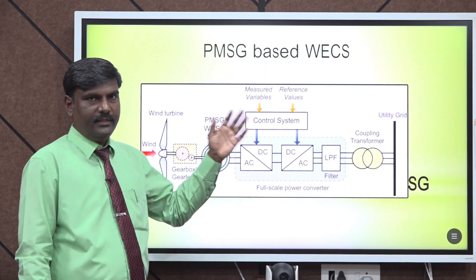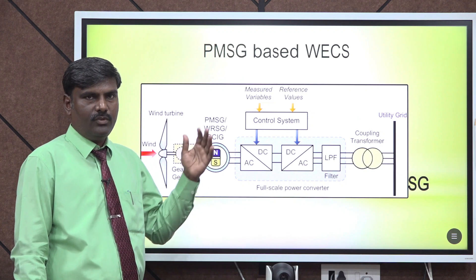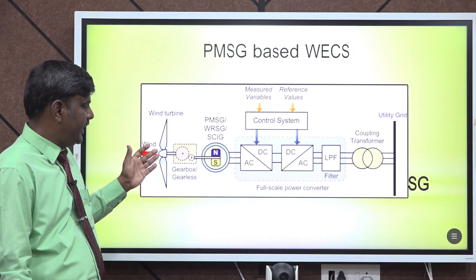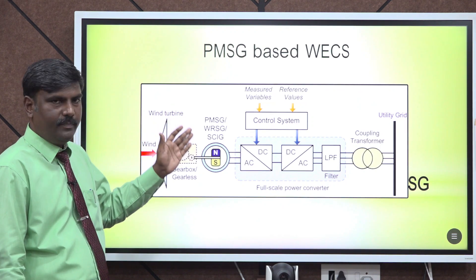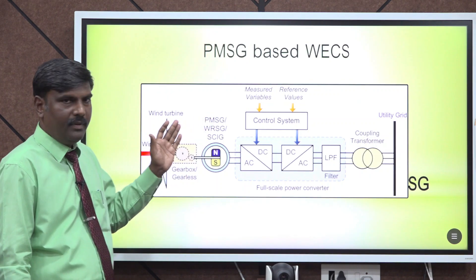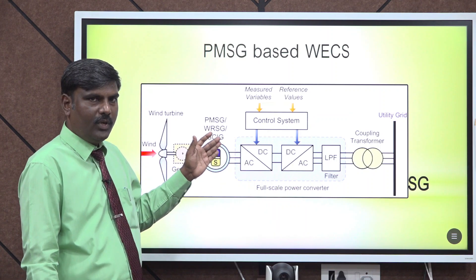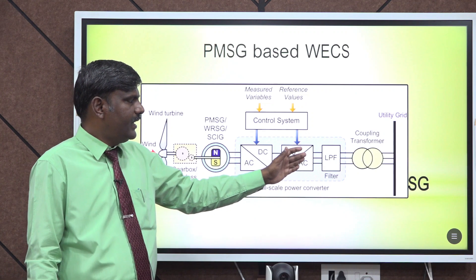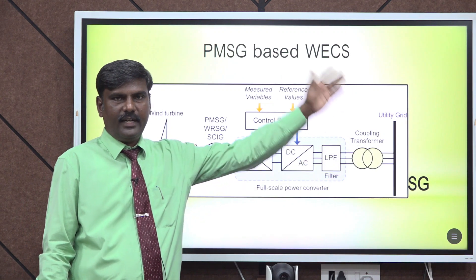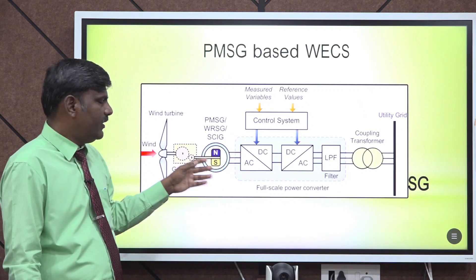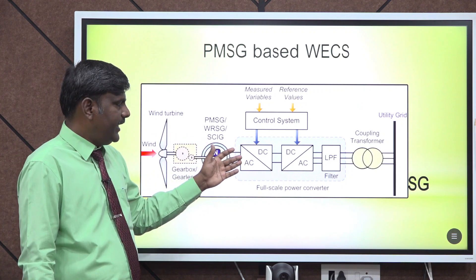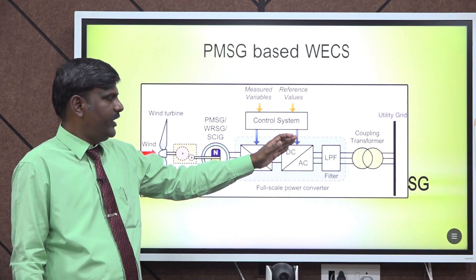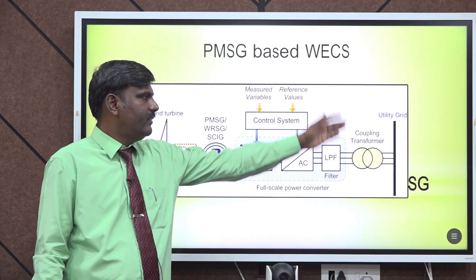The next important generator is PMSG based wind energy conversion system, which is used for low power rating systems. Power is collected with the help of a wind turbine and then a gearbox is used to increase the speed of the shaft, which is connected with the PMSG — permanent magnet synchronous generator. The output of PMSG is connected with an AC to DC converter, then a DC to AC converter, and through a filter it is given to a transformer, which is then connected to the grid.